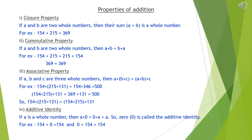Second, commutative property. It states that if a and b are two whole numbers, then a plus b is equal to b plus a. In this property, we have changed only the order of the numbers. For example, 154 plus 215 equals 369, and 215 plus 154 also equals 369.